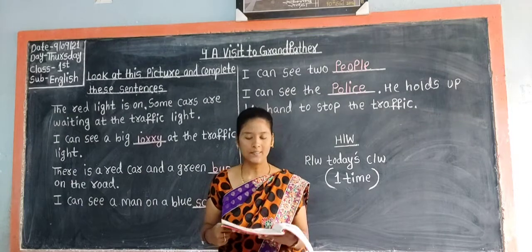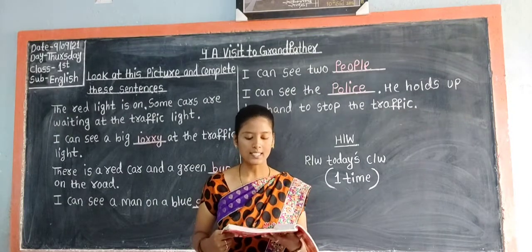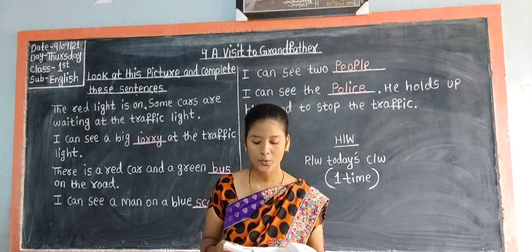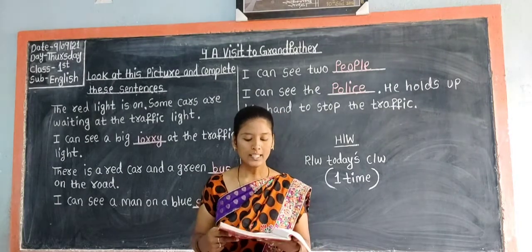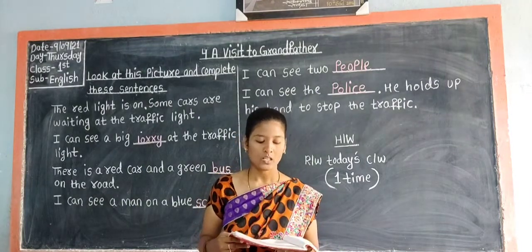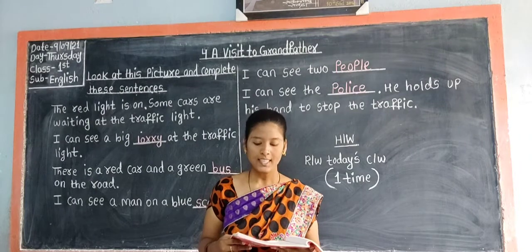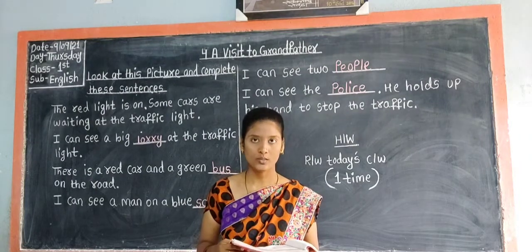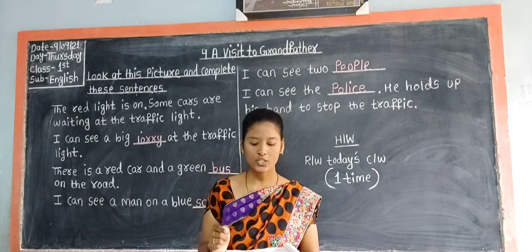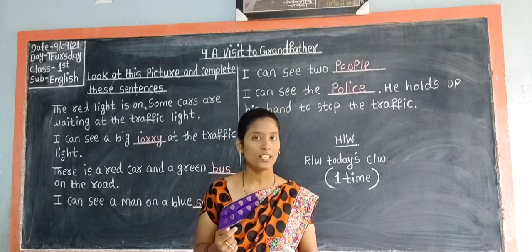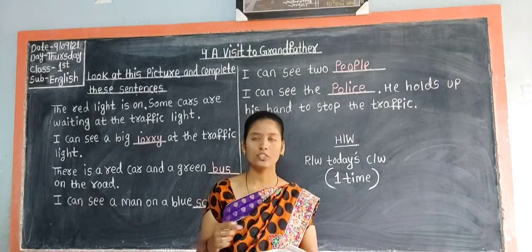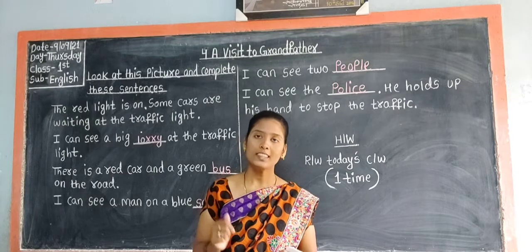The next exercise is Life Skills. 'Grandpa has a garden behind his house.' Tick the actions that are good for nature. Cross the actions that are not good for nature. So children, we have to put a tick for actions which are good for nature and put a cross for actions which are not good for nature.